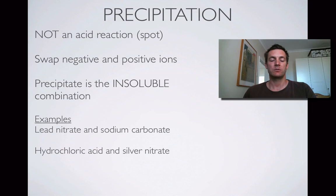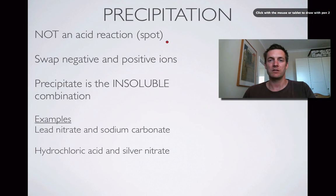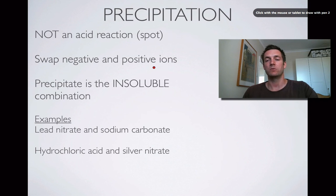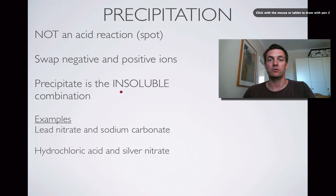Now, precipitation reactions — what does this mean? Basically a precipitation reaction will happen if you haven't got the combination of substances that will give you one of those three acid reactions we've just seen. It doesn't mean an acid won't be present; it just means there won't be a metal, a base, or a carbonate for the acid to react with. We simply swap the negative and positive ions to find out what our products are going to be. Whereas before we had salt and hydrogen, salt and water, or salt and water and carbon dioxide — here we just swap the positive and negative ions and the precipitate will be the insoluble combination of ions.